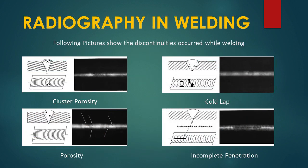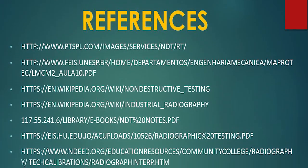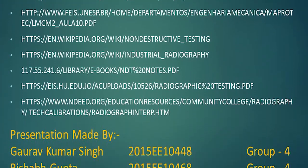Here are a few pictures of discontinuities that appear after welding — cluster porosity, cold lap, porosity, and incomplete penetration are a few of those discontinuities. Variation on the photographic film is easily detected and recognized, making radiographic testing efficient. Hope you enjoyed watching our video. Thank you.